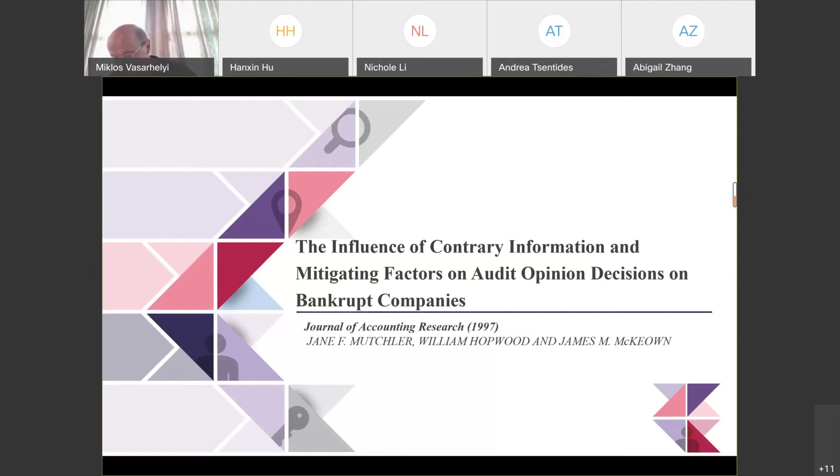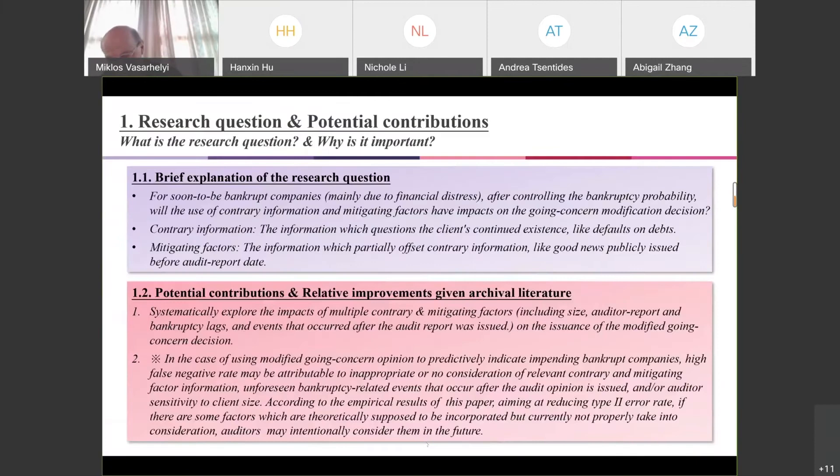The topic of this paper is to explore the influence of contrary information and mitigating factors on audit opinion decisions on bankrupt companies. This paper was published in the Journal of Accounting Research in 1997. In this presentation, I would like to use the framework what, why, and how to present it. I suppose that can be more consistent and logical.